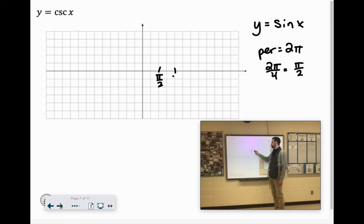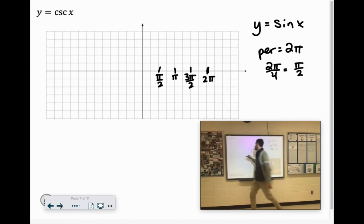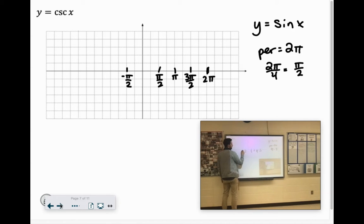2π over 2 which is π, 3π over 2, and 4π over 2 is 2π. And we'll also go the negative route. So we'll have negative π over 2, negative π, negative 3π over 2, and negative 2π.